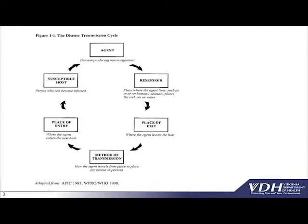In order for the agent to cause illness, it has to leave the place where it lives through a portal of exit, then go through a mode of transmission specific to that agent, enter a portal of entry of somebody's body, and the host has to be susceptible for disease to occur. All these steps have to take place for a communicable disease to be transmitted — from where the agent lives, through a mode of transmission specific for that agent, entering the body through a portal specific for that agent.